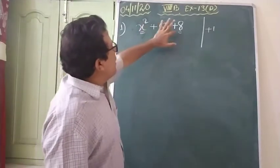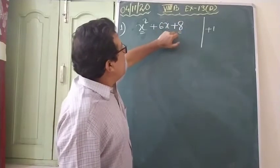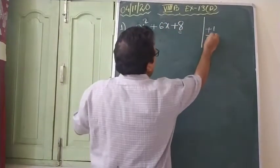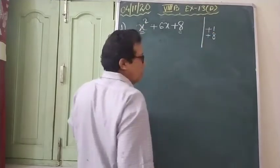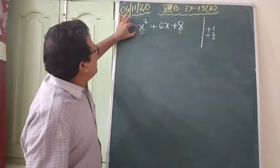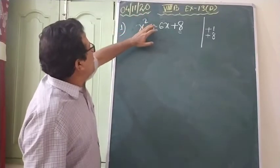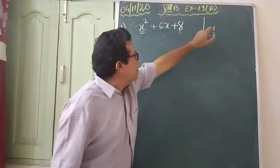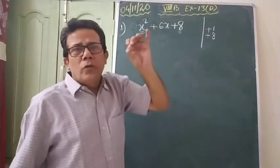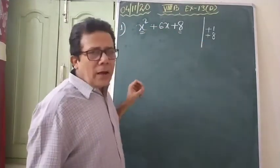Now, you see what is the constant — the number present here in this question. It is eight — plus eight. Take the coefficient of the highest power term: plus one. Then go to the number or the constant: plus eight.